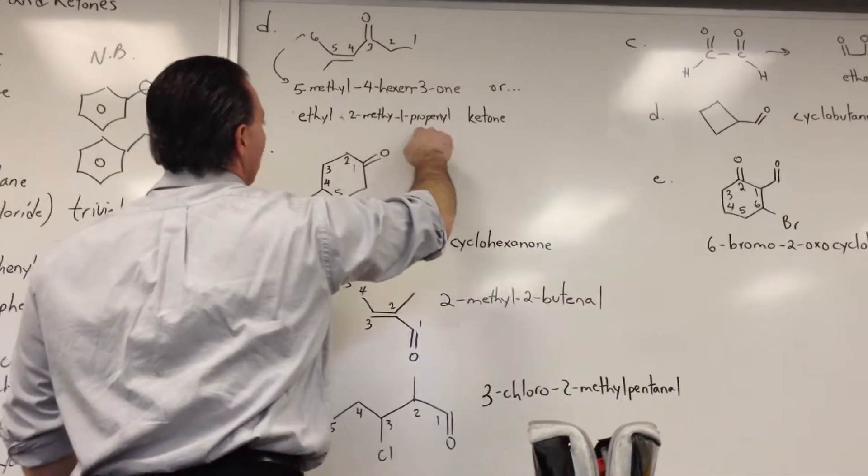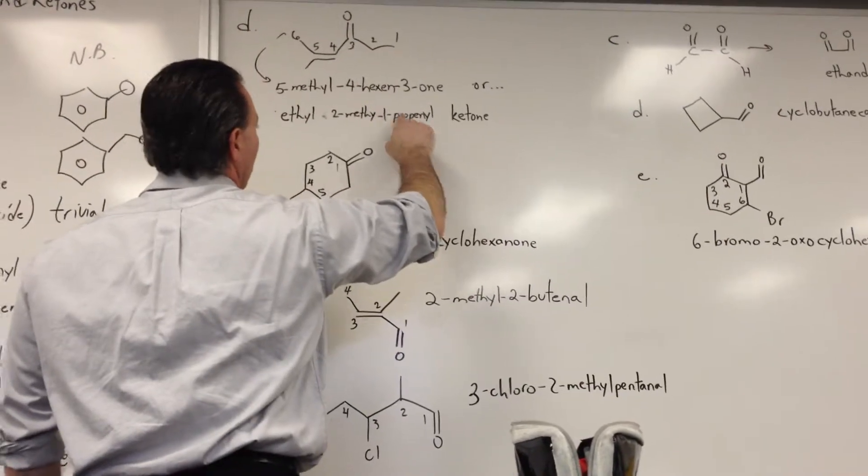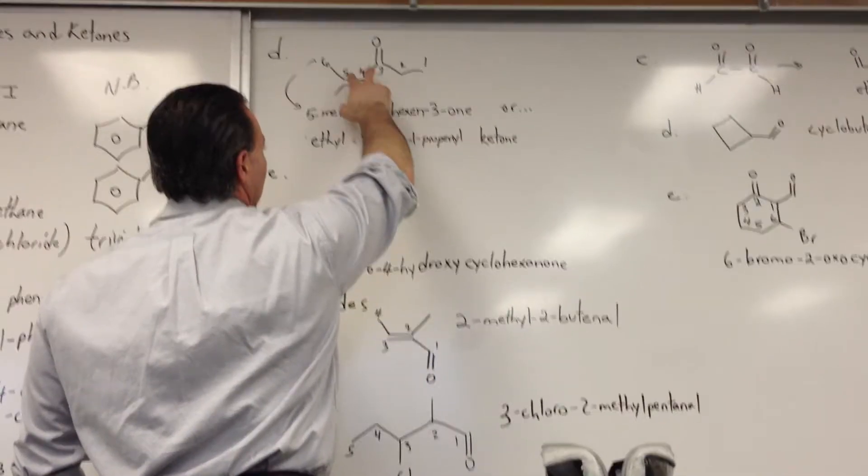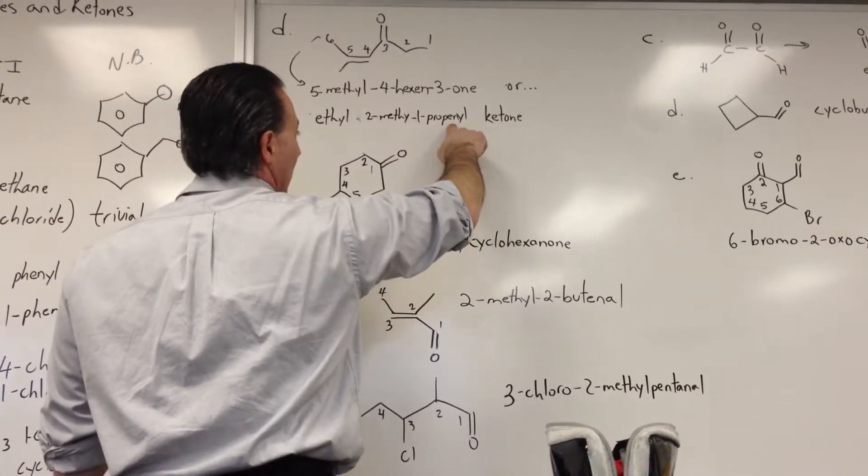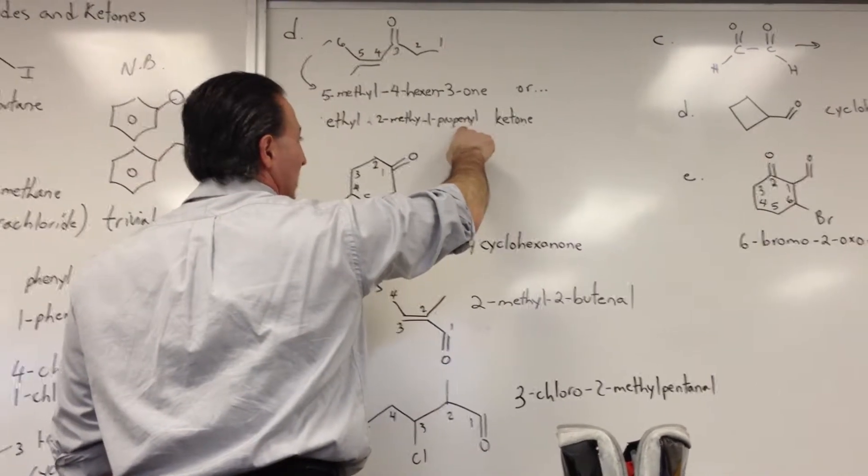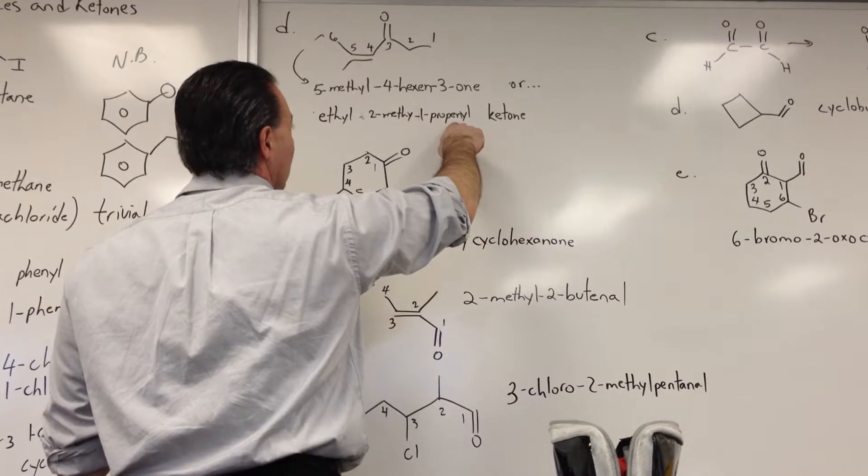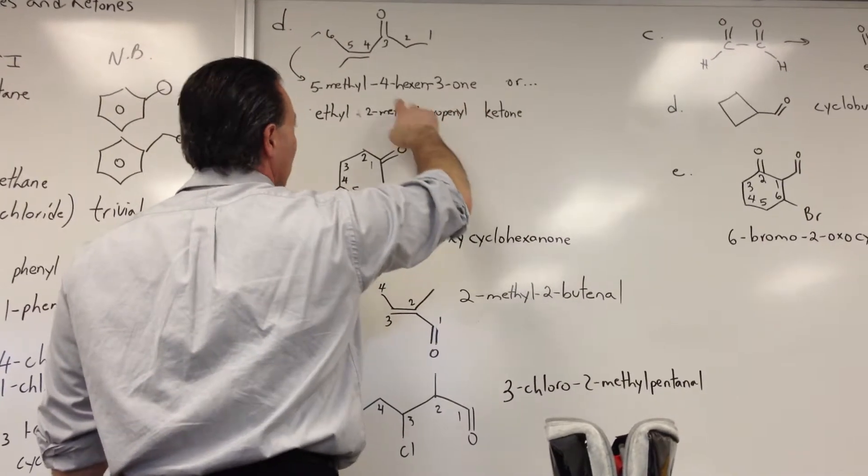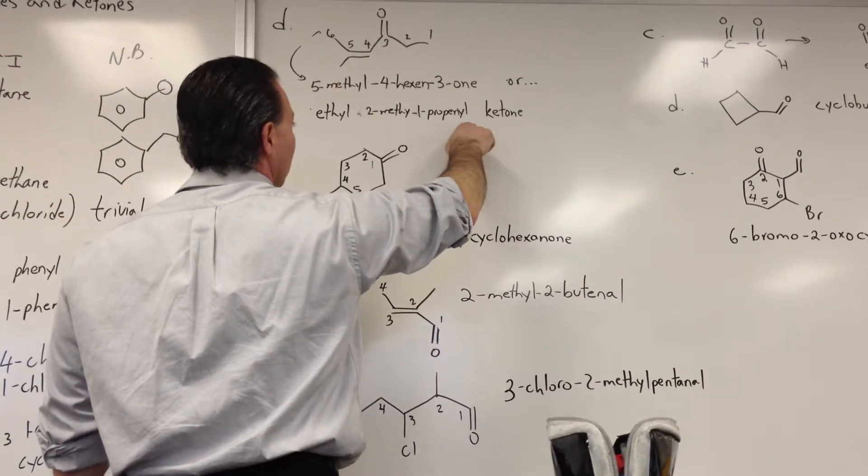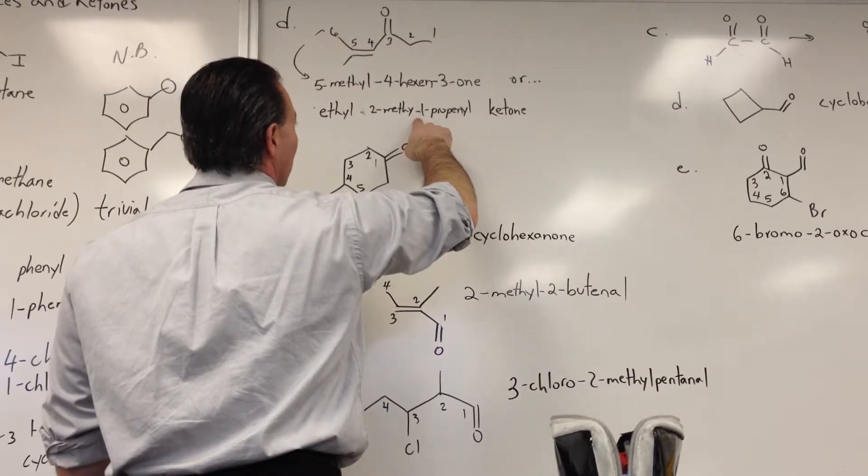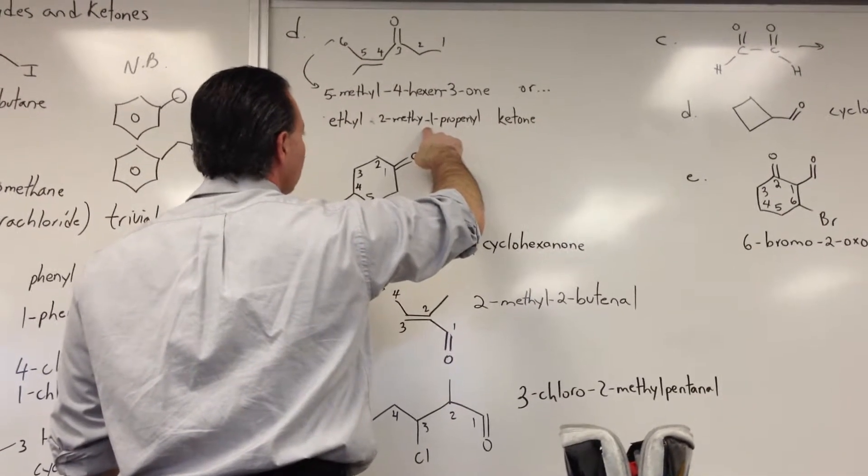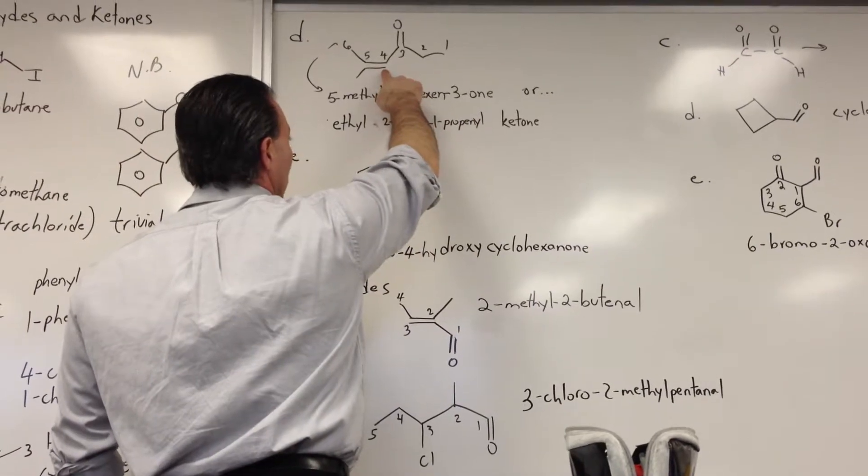You could also call it ethyl, here's the ethyl part, 2-methyl-1-propenyl ketone. When you have a double bond containing substituent, it has to end in the yl, but also has to have the ene in it to show that it's an alkene. So an alkenyl substituent, with a 3-carbon backbone is propenyl.